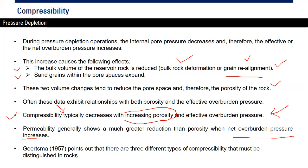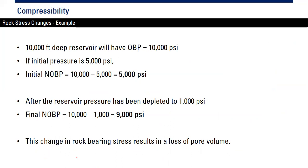Here is a simple calculation example. If you have a reservoir located at 10,000 feet deep with a gradient of one psi per foot, the overburden pressure is 10,000 psi. If the initial reservoir pressure is 5,000 psi, then the net overburden pressure is 10,000 minus 5,000, which equals 5,000 psi.